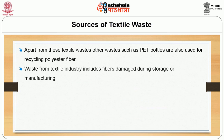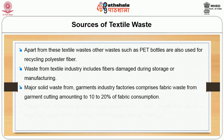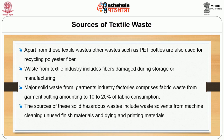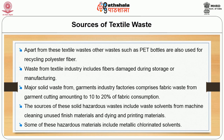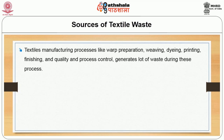Waste from textile industry includes fibers damaged during storage or manufacturing. Major solid waste from garment industry factories comprises fabric waste from garment cutting, amounting to 10 to 20% of fabric consumption. Sources of solid hazardous waste include waste solvents from machine cleaning, unused finishing materials, and dyeing and printing materials, including metallic chlorinated solvents. Textile manufacturing processes like bath preparation, weaving, dyeing, printing, finishing and quality control all generate significant waste.